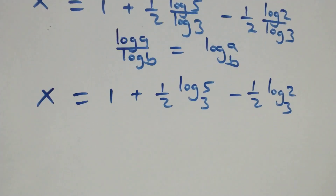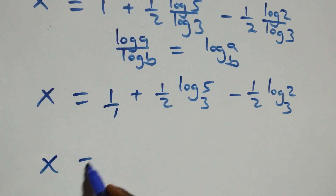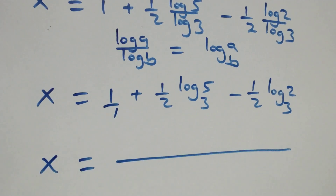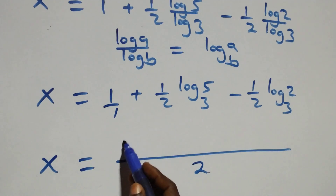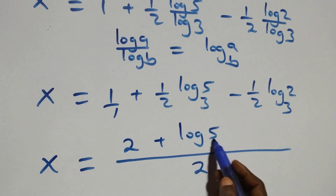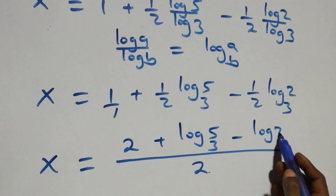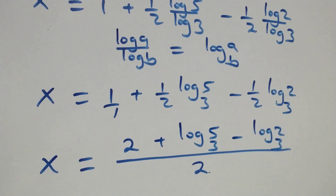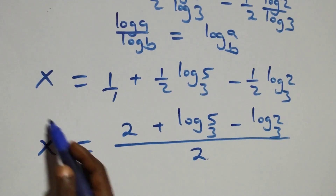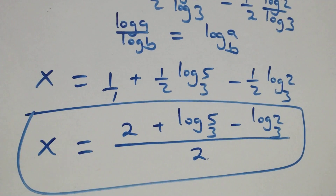Then here we bring this together as one fraction. We get x equals to 2 plus log₃5 minus log₃2, all over 2. That is the value of x.